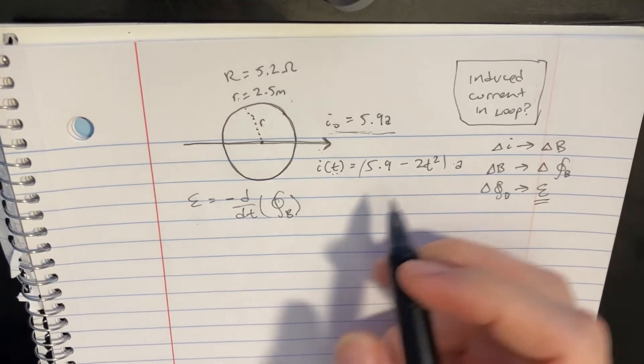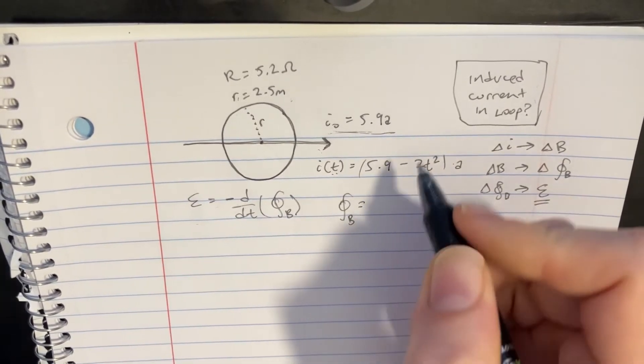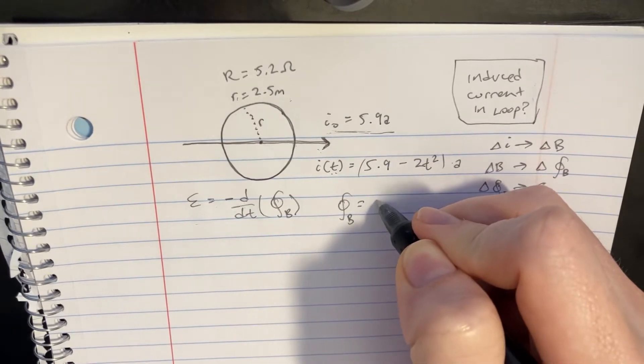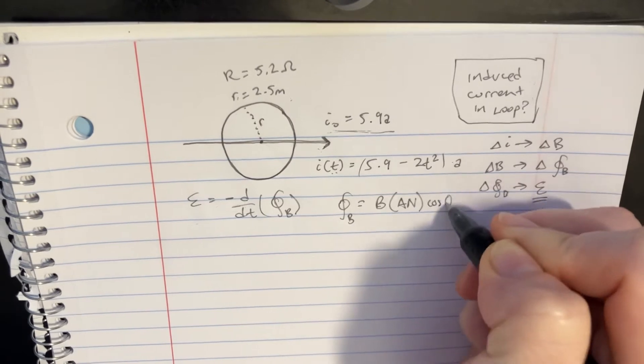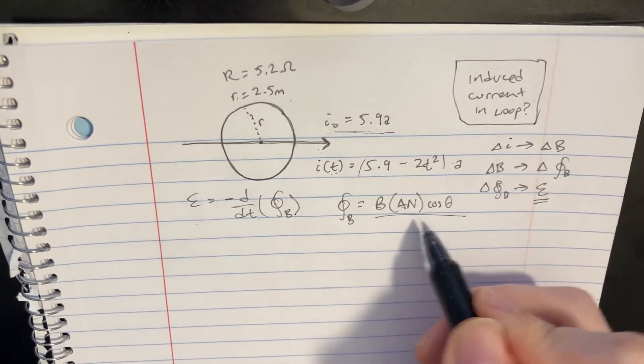And so we'll look at the equation of flux and we'll say, alright, well, it's B and then we can say AN cosine theta, kind of skipping through a couple of steps here, but this is the essential formula.